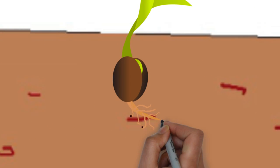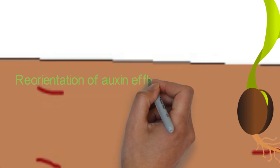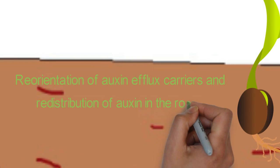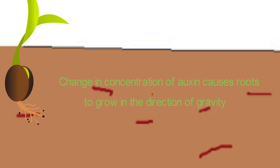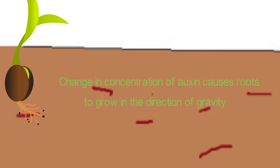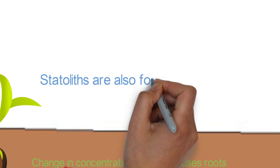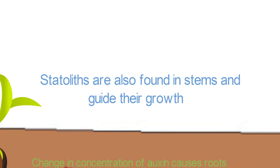This sedimentation transmits a signal which leads to reorientation of auxin efflux carriers and subsequent redistribution of auxin in the root. And this change in concentration of auxin causes the roots to grow in the direction of gravity. Similarly, statoliths are also found in stems and guide their growth in direction opposite to gravity.